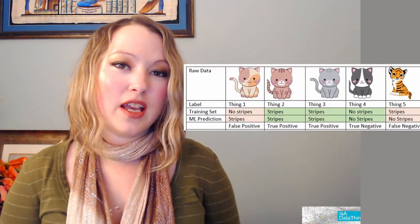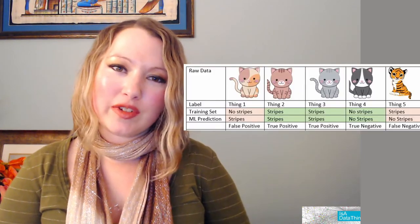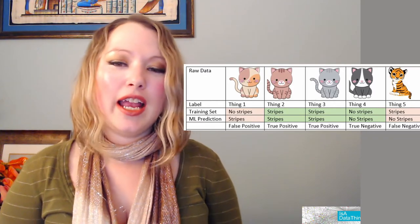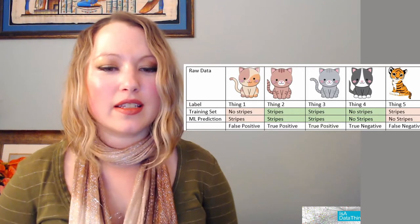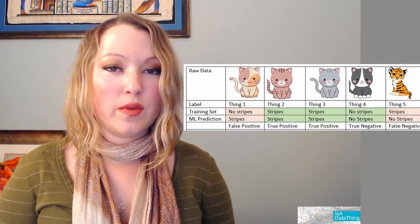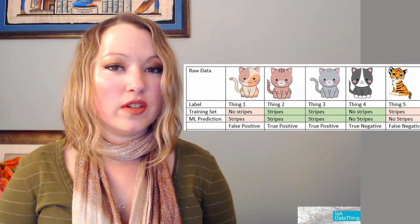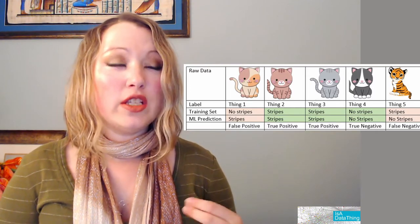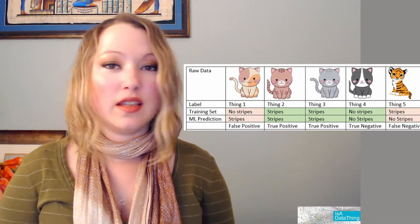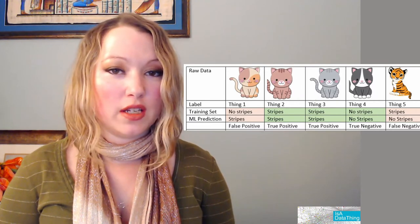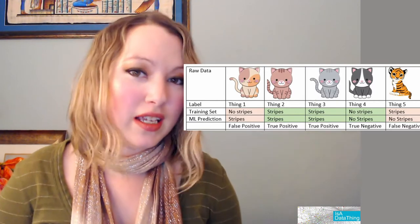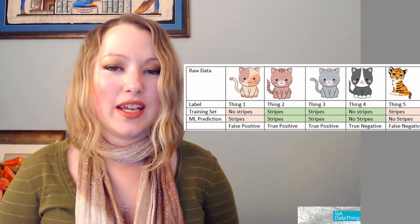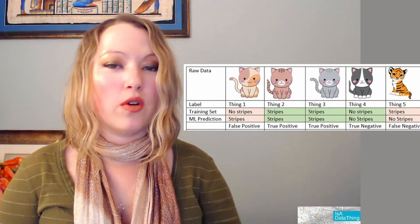So in this case, we have five cats. You can see they are all different colors. One is actually technically a tiger, and they all have different markings. The very first one is a false positive, where we taught the machine this cat does not have stripes, and the machine comes back and says it thinks it does based on what it was taught — not right. Things two, three, and four are all correct.